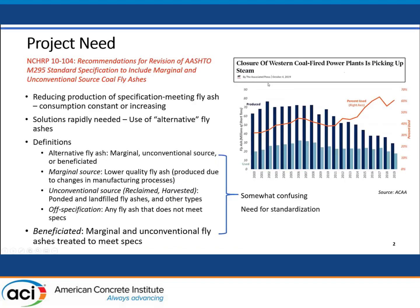As you've heard quite a few times today, over the recent past, the amount of high-quality specification-meeting fly ash produced has steadily decreased while consumption has remained constant or slightly increased. As a result, the percentage of fly ash consumed has steadily increased, as shown in this plot by the ACAA. Due to a number of factors, in the future it is possible that fly ash production could dip below market demand, so there's really a need to find other sources of fly ash to meet this demand, whether that's location-specific or otherwise.